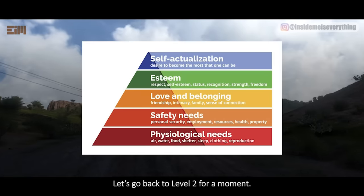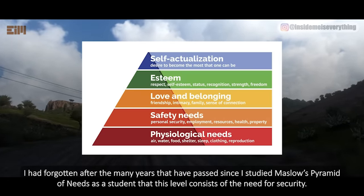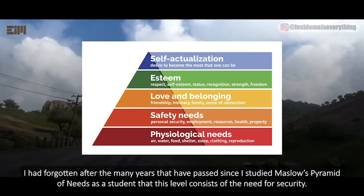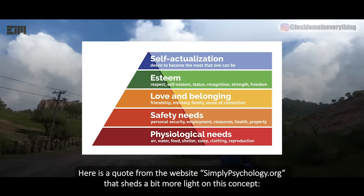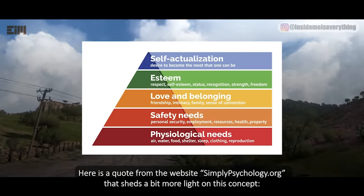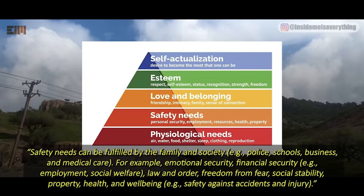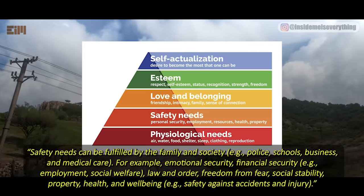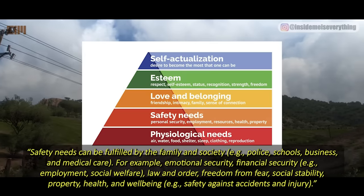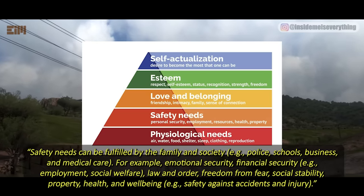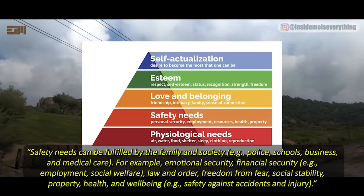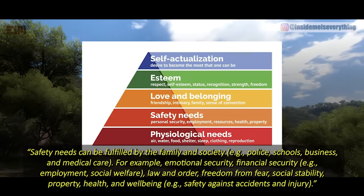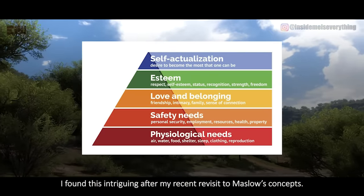Let's go back to level 2 for a moment. After my many years since studying Maslow's pyramid, I was reminded that this level consists of the need for security. Here is a quote from Simply Psychology: 'Safety needs can be fulfilled by the family and society — for example, police, schools, business, and medical care. For example, emotional security, financial security, employment, social welfare, law and order, freedom from fear, social stability, property, health and well-being, and safety against accidents and injury.' I found this intriguing after my recent revisit to Maslow's concepts.